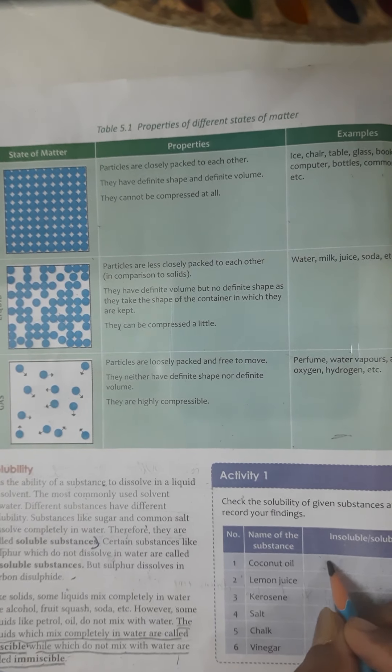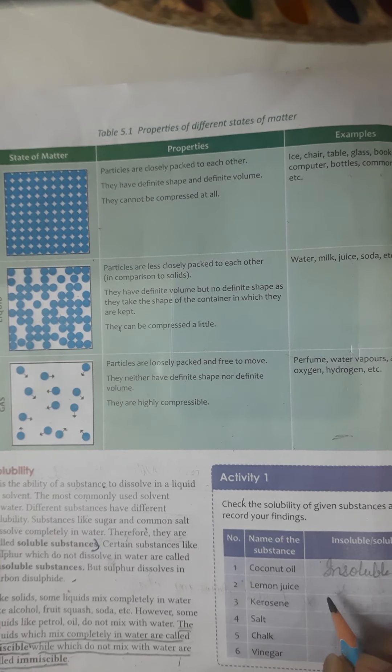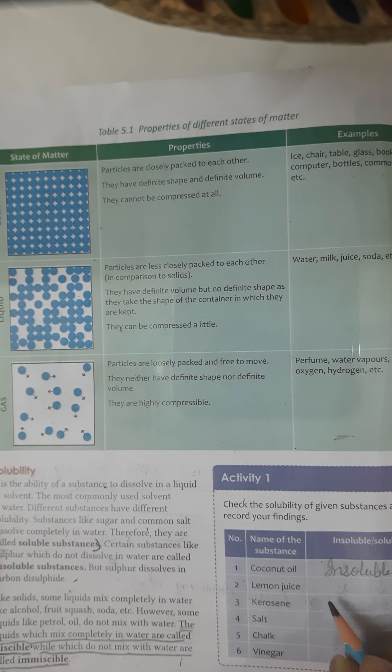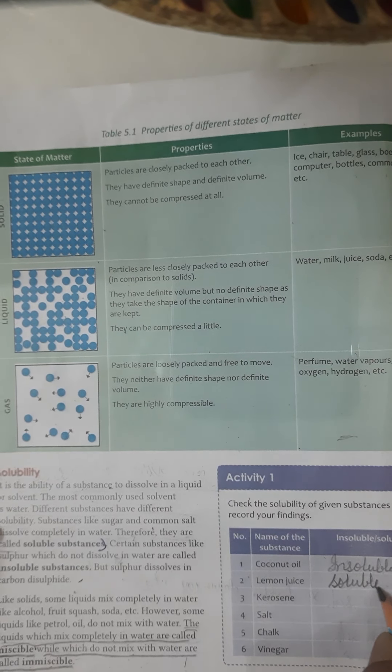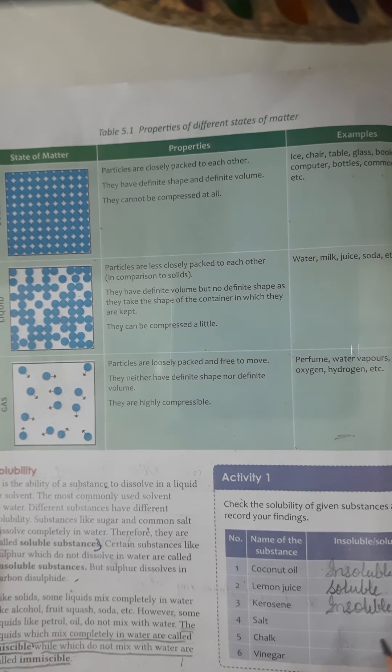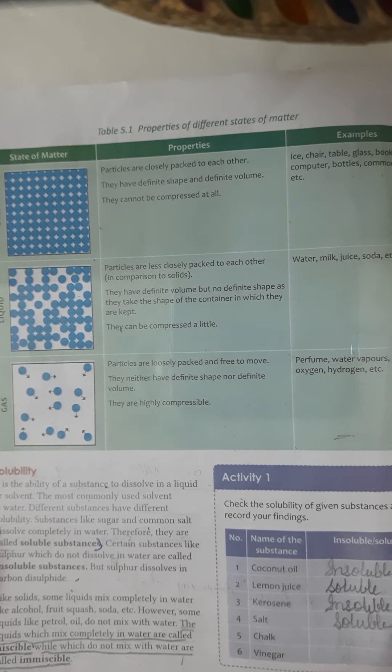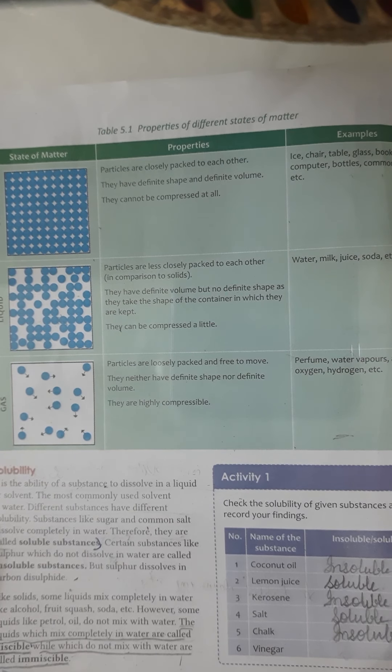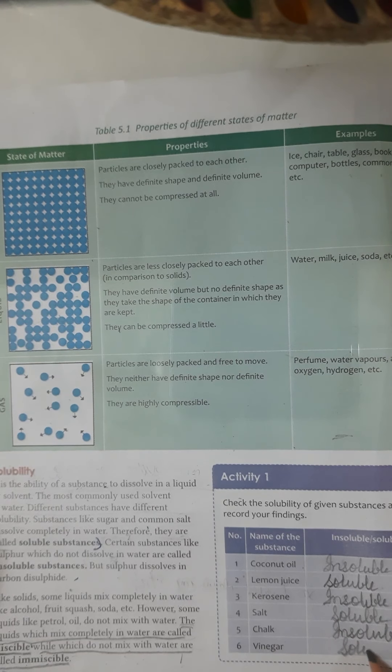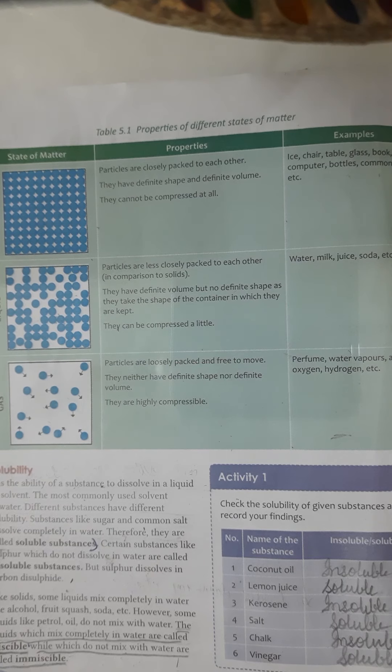Now let us do one activity: check the solubility of given substances. Coconut oil — insoluble, it floats on water because it is less dense. Lemon juice — soluble, it fully dissolves in water. Kerosene oil — insoluble. Salt — soluble, fully dissolved in water. Chalk — insoluble. Vinegar — soluble. These are some materials which are soluble and insoluble in water.